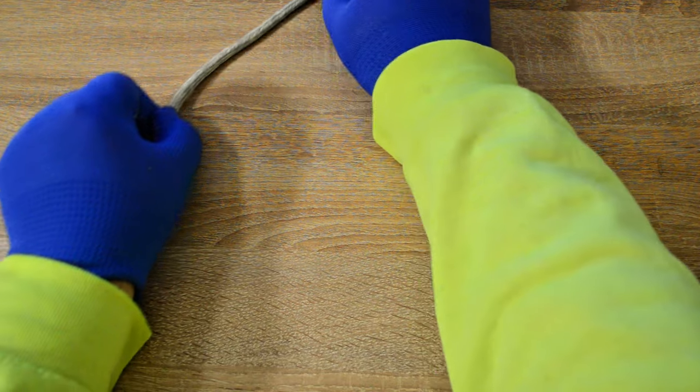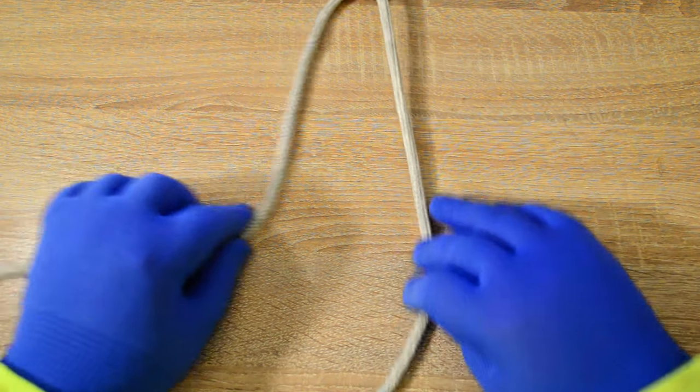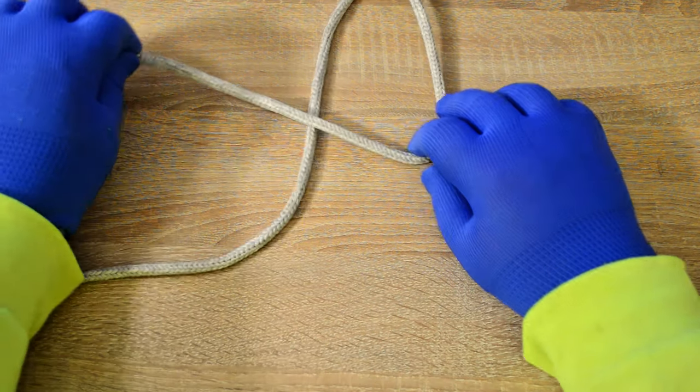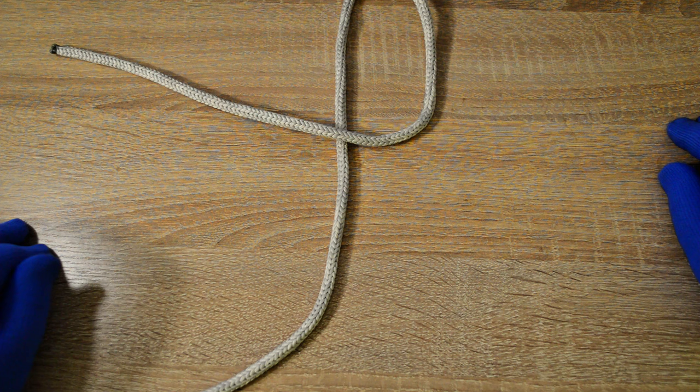The first step is to take the end of the rope and run it around the object that you're tying to. Then take the end of the rope and place it over the standing part of the rope to create a loop.